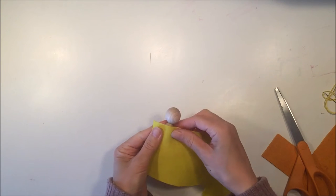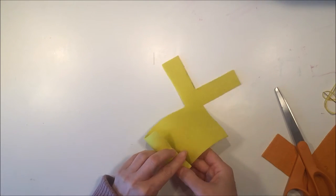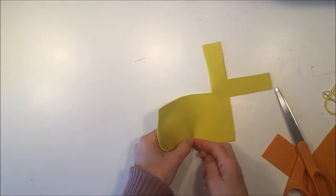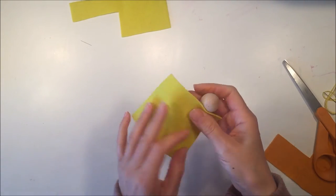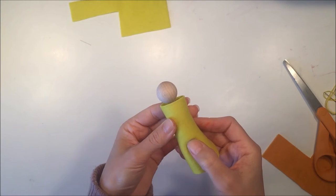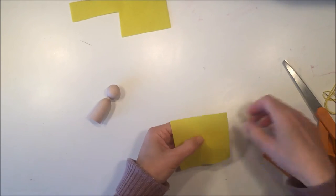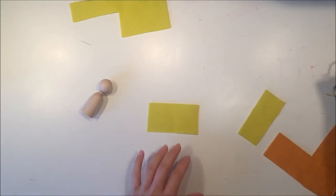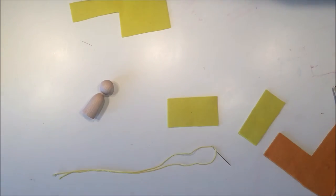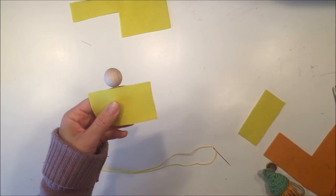So the next thing I want to do is measure off how much felt I'm going to need. So I just wrap the felt around the base of the finger puppet, and then I can trim off how much I need. I'm also going to trim off the lower part so that it ends up being flush with the finger puppet base so these ones won't tip over at all.